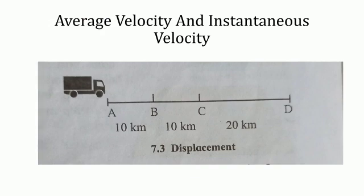Average velocity and instantaneous velocity. Average velocity is the rate at which an object changes its position from one place to another. The velocity of an object can change even while it is moving along a straight line. For example, suppose a truck covers a distance of 40 kilometers from A to D in a straight line — its displacement will be 40 kilometers. If it requires 1 hour for this, its average velocity is 40 kilometers per hour.